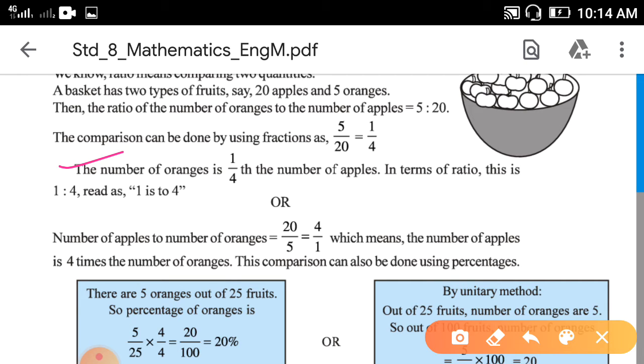In terms of ratio, this is read as "1 is to 4." How to read if it is written like that: 1:4.